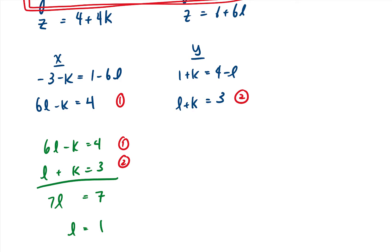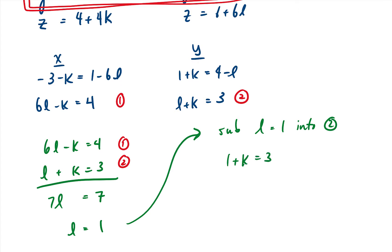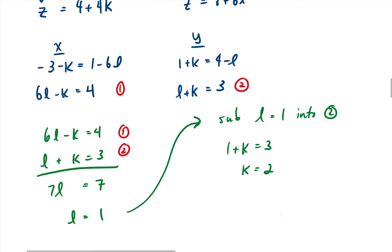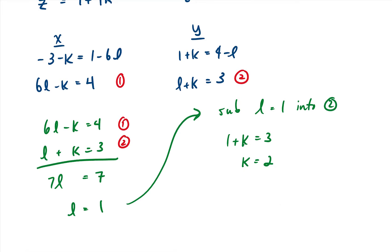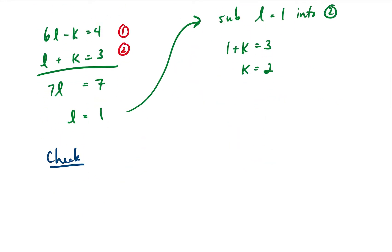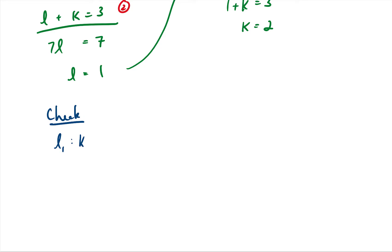We get that l is equal to 1. Next, substituting l equals 1 into equation two, we get 1 plus k equals 3, so k is equal to 2. This tells us we have a k and l value where the x and y values intersect at a specific point. Now let's check to see if the z value also intersects at that point. For line one, k must be 2, and for line two, l must be 1 for them to intersect at that x and y value.